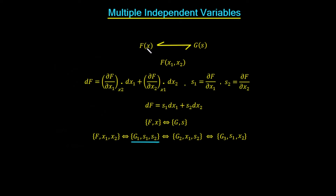Rather than having a function of one independent variable x, we could have a function of two independent variables — we'll call them x1 and x2. We use x1 and x2 notation rather than x, y, z so that we can extend up to n variables easily. This is just a function of two variables, x1 and x2, and it's going to generate a surface in 3D space. So rather than taking the Legendre transform of a curve, we're taking the Legendre transform of a surface, and we're going to generate another surface.